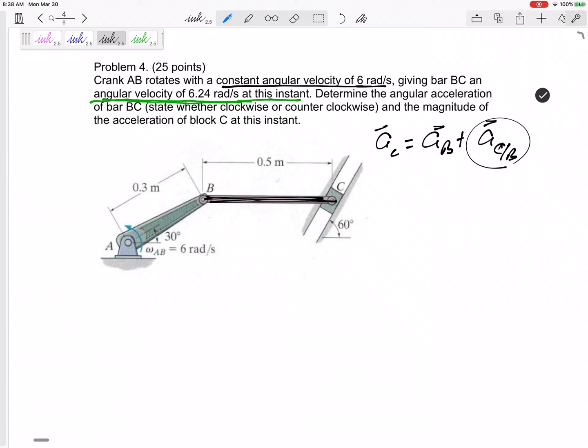AC equals AB plus AC slash B. And this, immediately rewrite this as alpha cross R minus omega squared R C slash B. All right, now, so this is C, then B, C slash B. So I've got to be very careful and do this as C slash B. C slash B is from B to C.